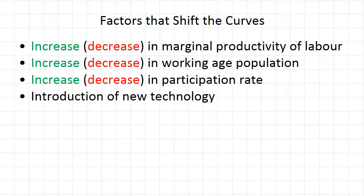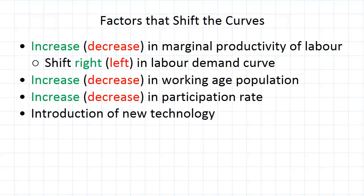Now the first one — changes in the marginal productivity of labor — it should be pretty easy to figure out which of the curves is going to be shifted by this. It is the demand curve, because remember we derived our labor demand curve from the marginal productivity of labor. We said the demand for labor is that for which the marginal productivity of labor is equal to the real wage.